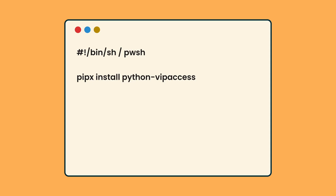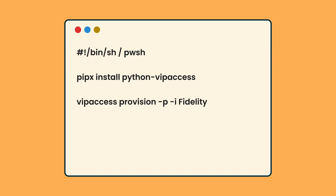To run python-vip-access, it's installed as one command you can run in whatever terminal you're using — Linux, macOS, or PowerShell on Windows. First, type "vipaccess provision", because we want to generate a new two-factor authentication code. Then add "-p", which prints the output without saving it to a file — remove this flag if you want to save to a file. Add "-i" followed by the issuer name, for example "Fidelity" or whatever you choose. Then add "-t" to specify the token format requested by Symantec's servers using their proprietary algorithm — in this example, that's VSMT.